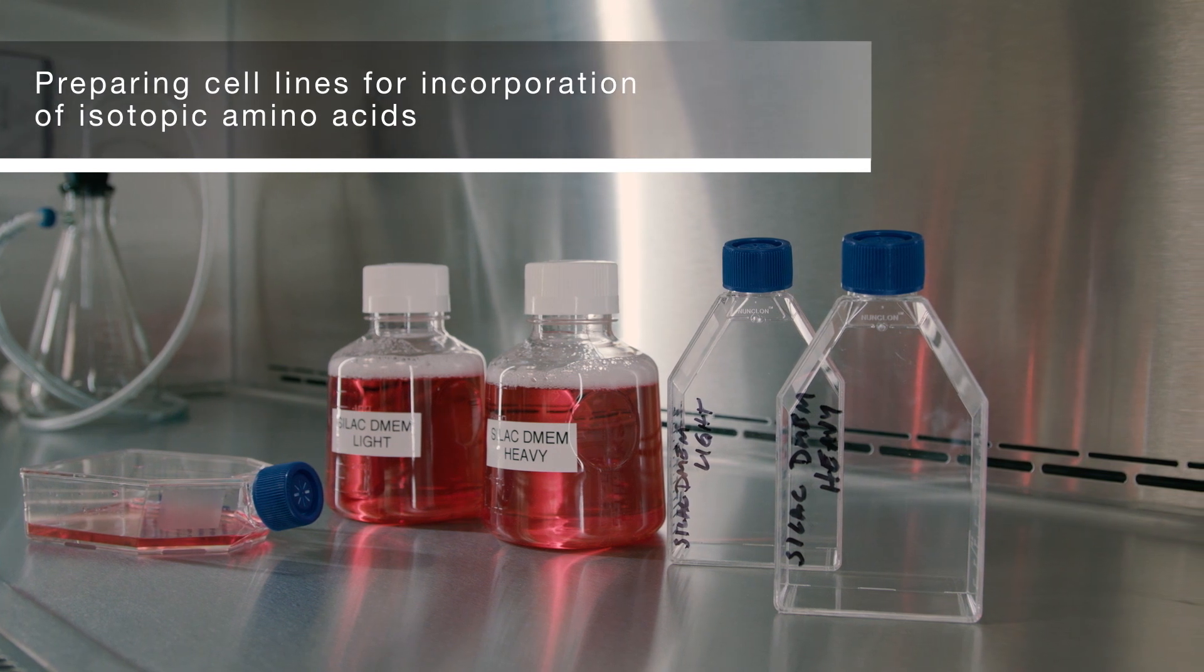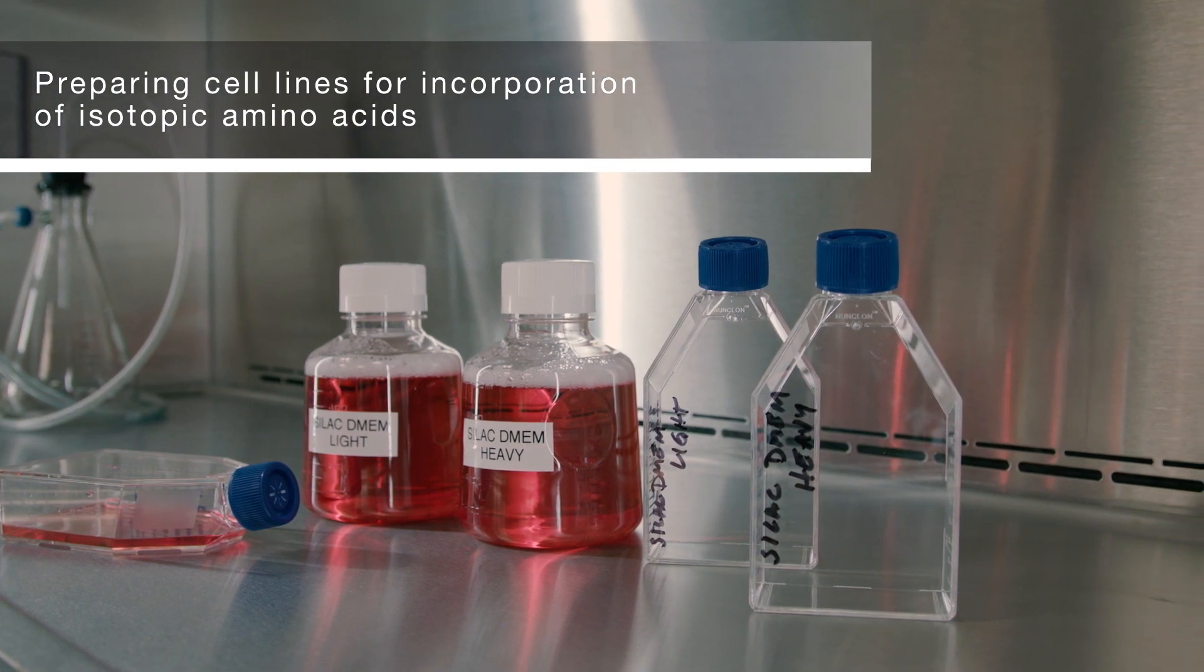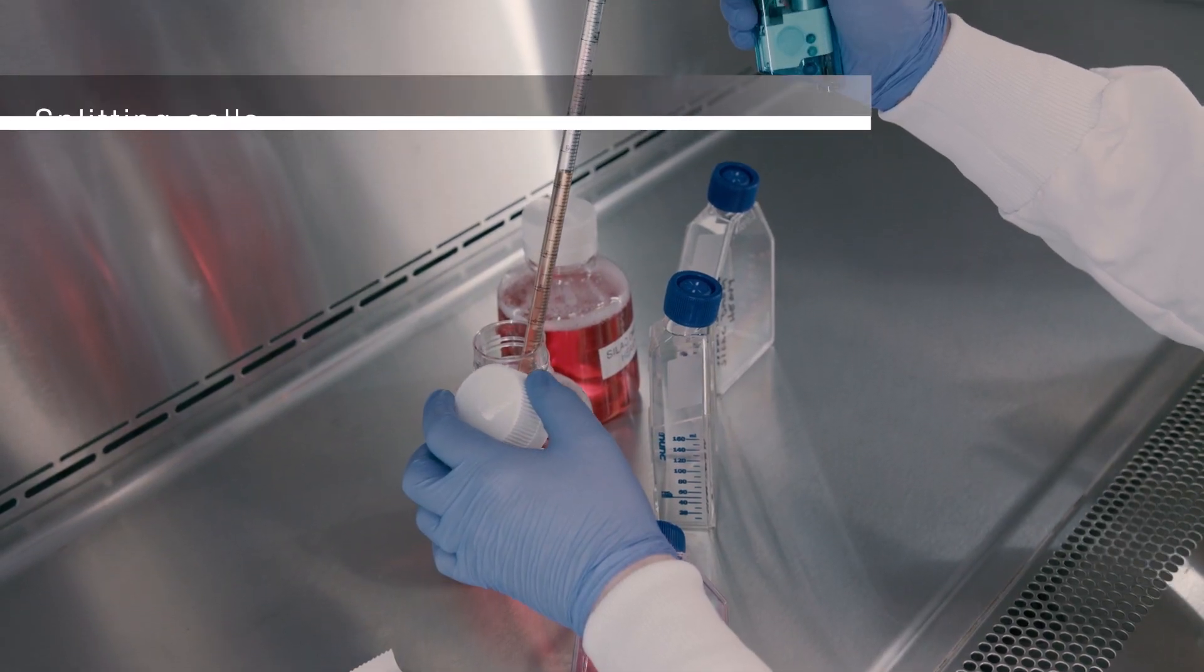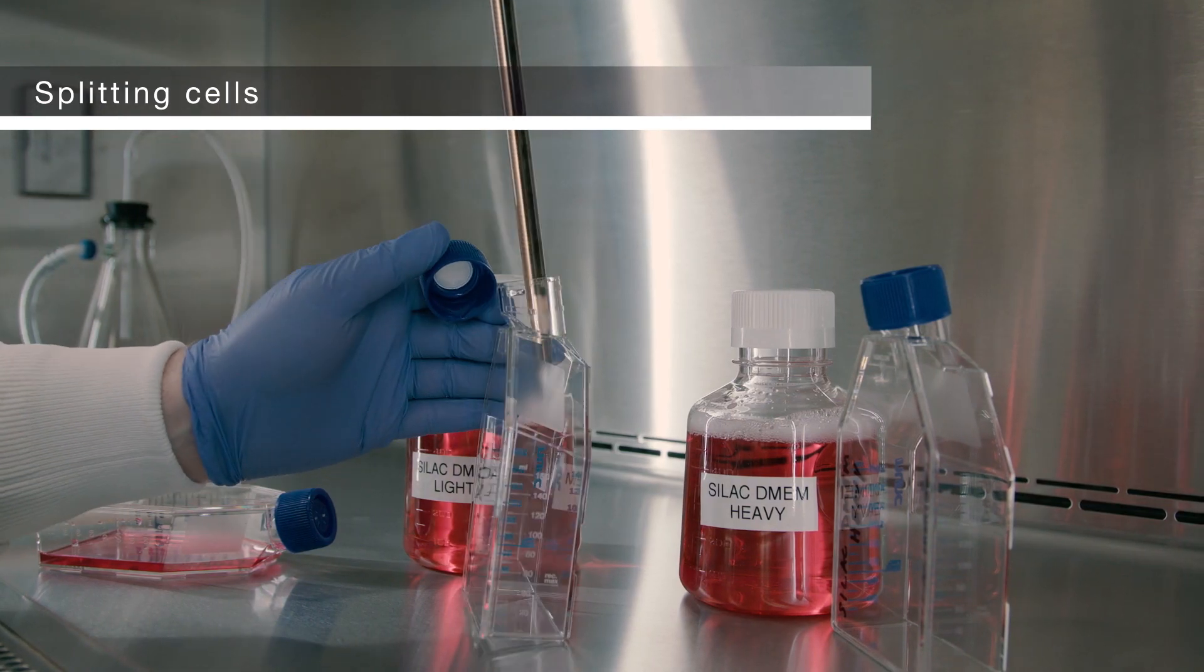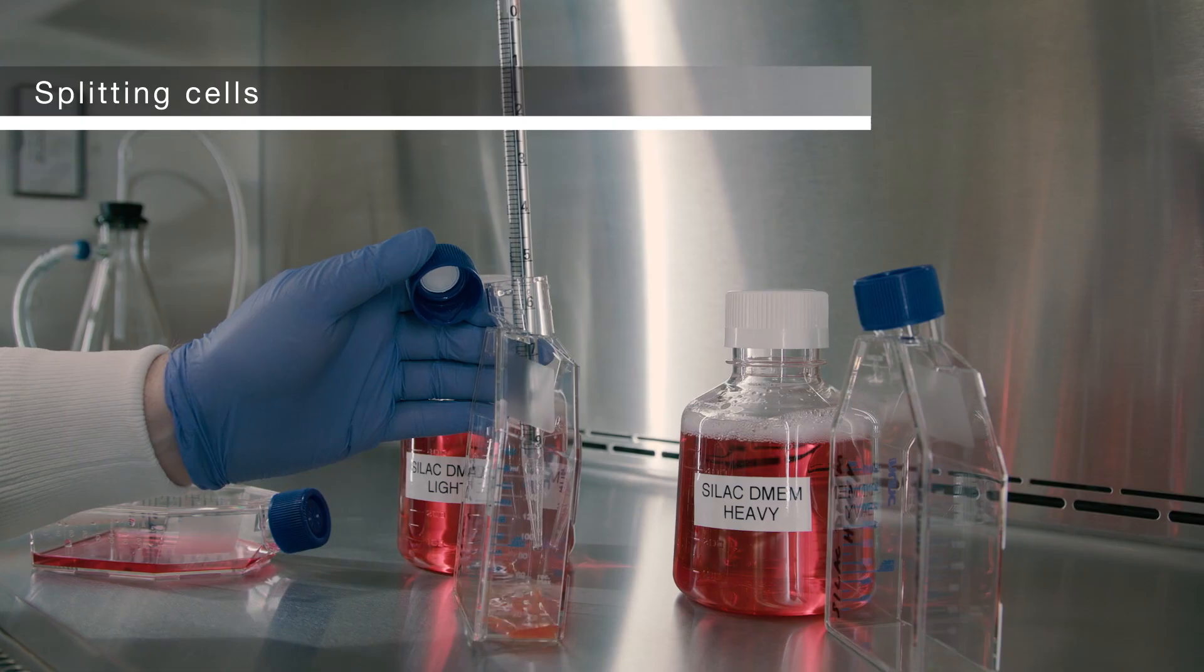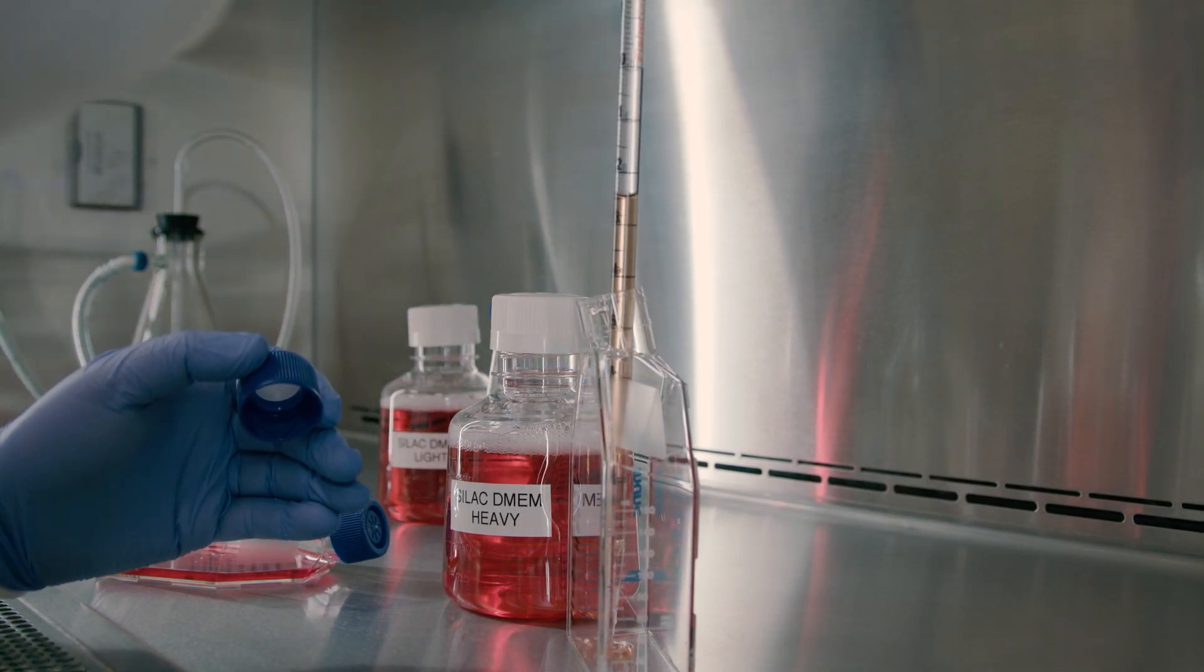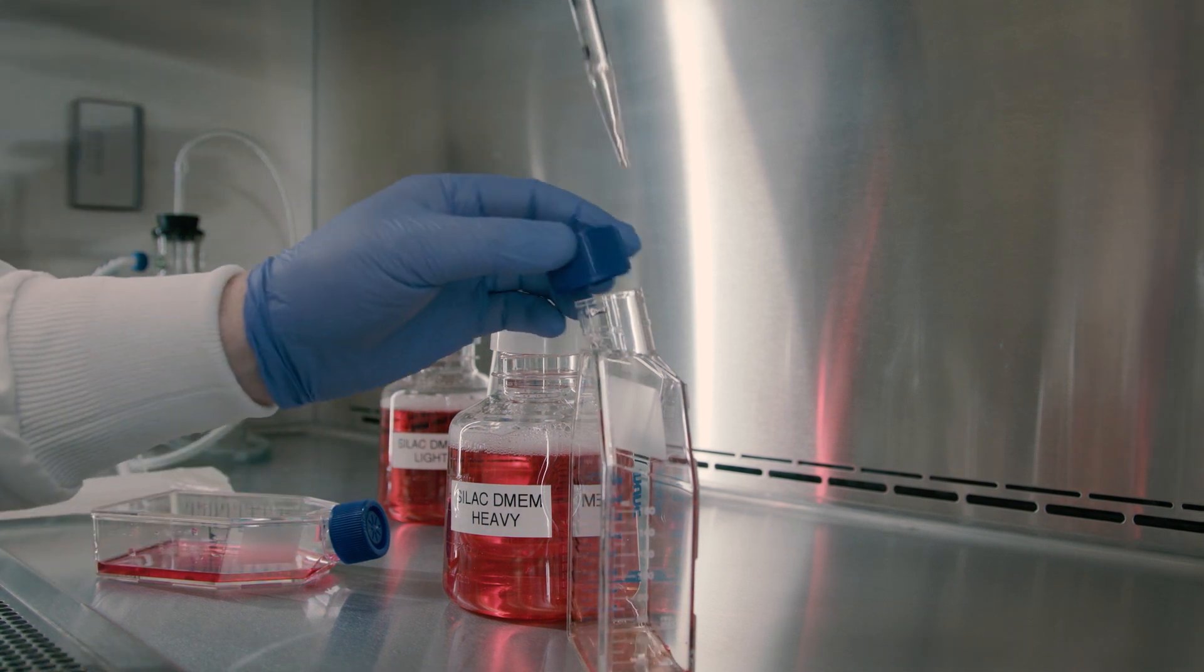The next step is to prepare your cell lines for incorporation of the isotope labeled amino acids. Depending on the cell type, split between 1 and 200,000 cells adapted to grow in the specific medium type into two or more tissue culture flasks or plates, with one containing the heavy medium and one containing the light medium.